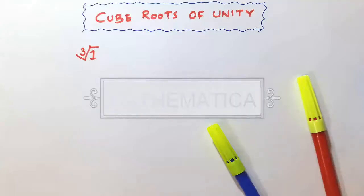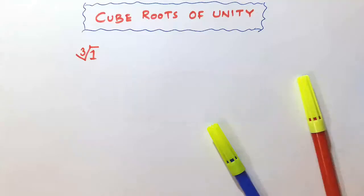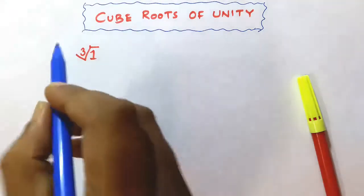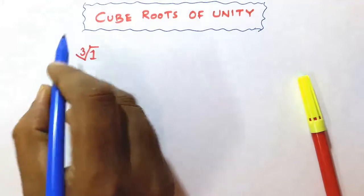Dear friends, what are the cube roots of unity? Generally, we know the cube root of unity is equal to 1. But since this is the cube root of unity, there should be three roots. One is real because this is 1. But what are the others? Let us try to find them.